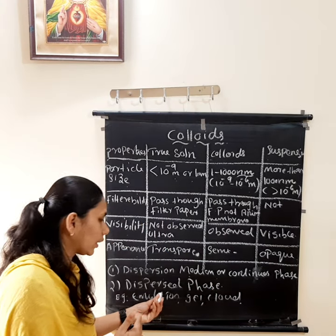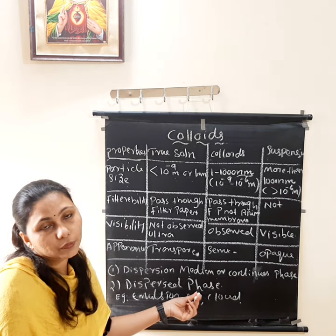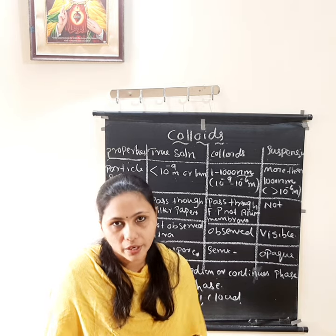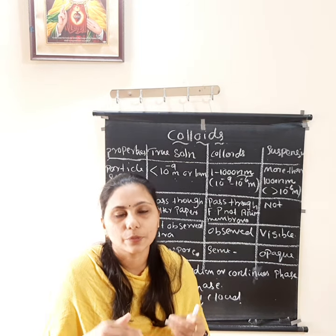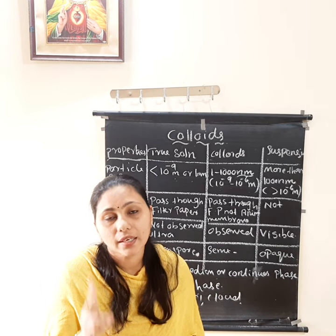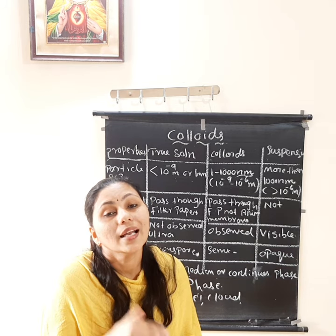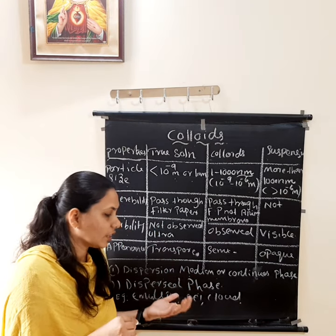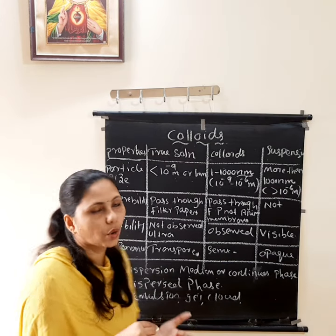The next phase is the dispersed phase, which is the discontinuous part or discontinuous phase of colloidal particles in the colloidal system. So colloids contain two phases: dispersion medium and dispersed phase. The dispersion medium is the continuous medium; the dispersed phase refers to the colloidal particles dispersed within it. Examples of colloidal systems include emulsions, gels, clouds, fog, etc.